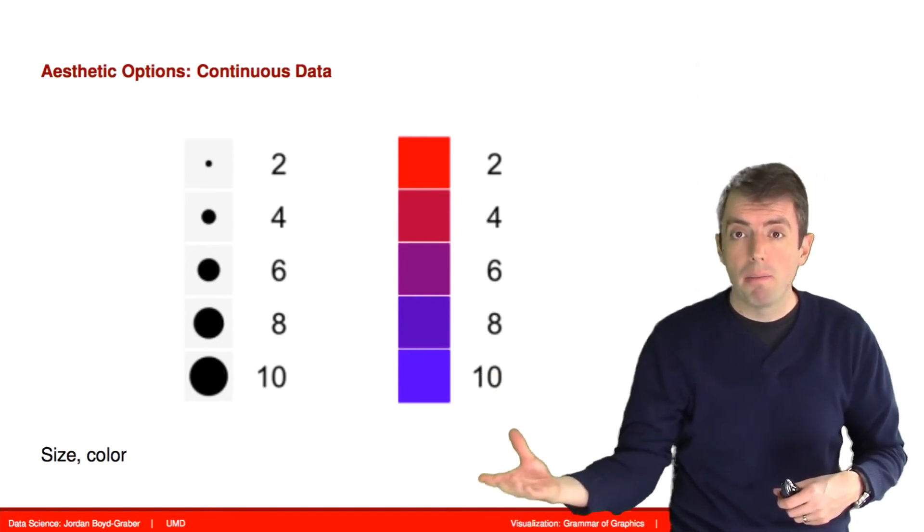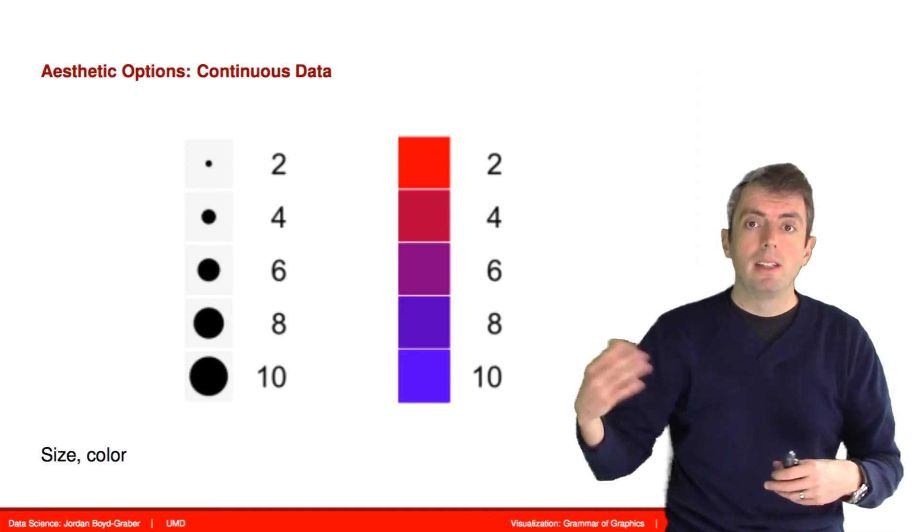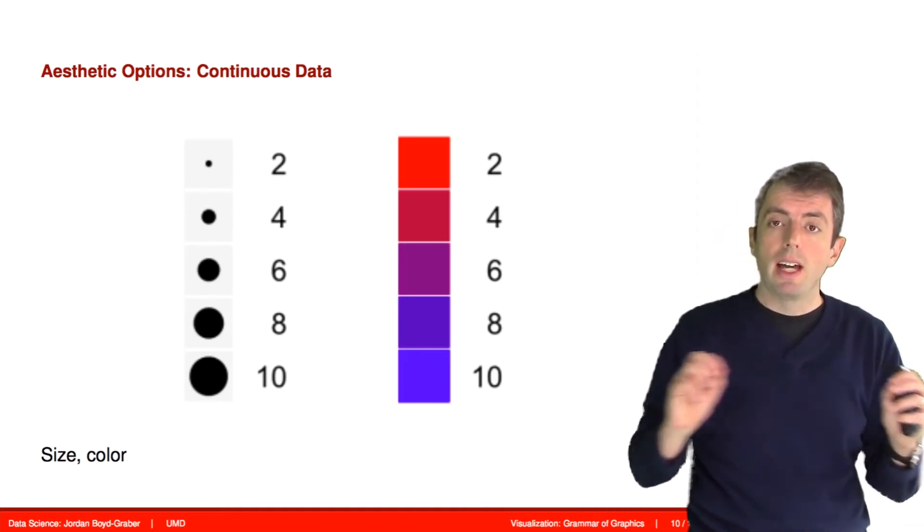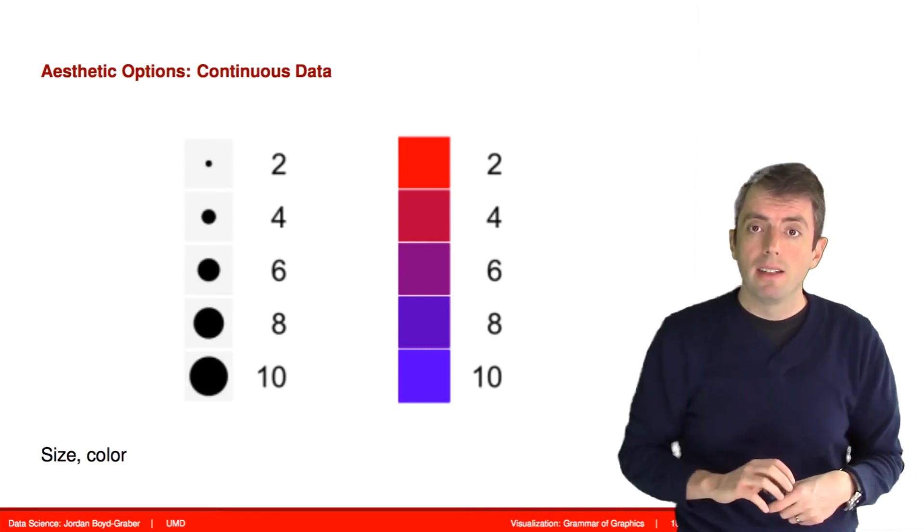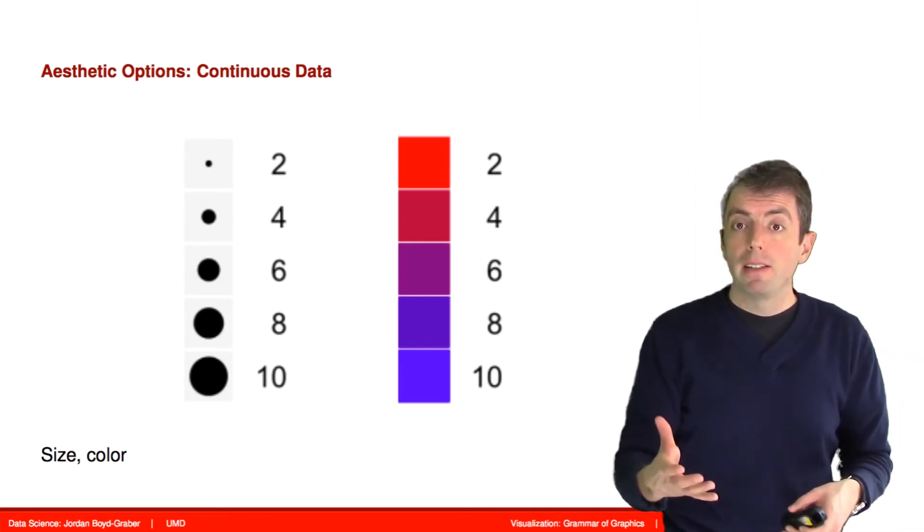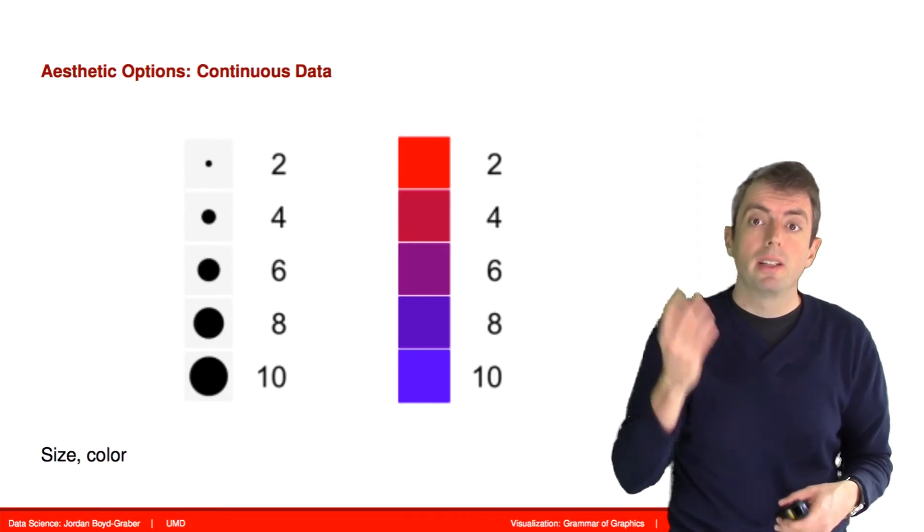We could have another column in our dataset that represents population or frequency. In addition to the x, y coordinates, we could say how big of a dot it is corresponds to this additional parameter.